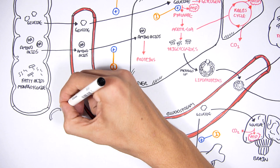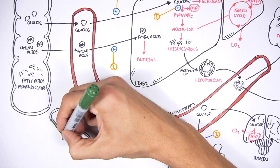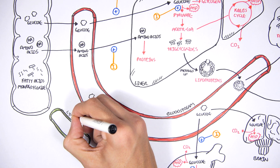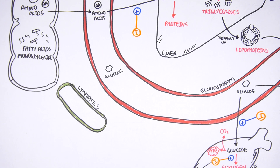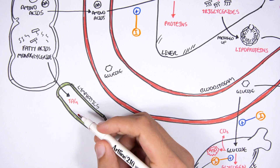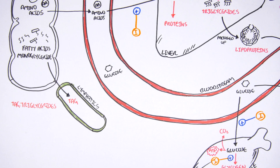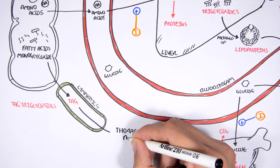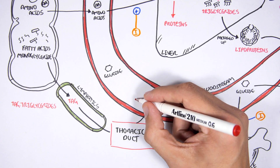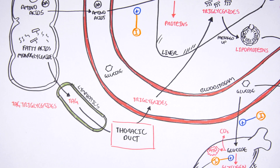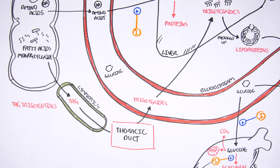Fatty acids and monoglycerides are unique in that they are not absorbed into the bloodstream but instead into the lymphatic system as chylomicrons — essentially packaged-up triglycerides. These chylomicrons travel through the lymphatic vessels to the thoracic duct, which transfers them to the bloodstream. From there, the fats go to the liver to be made into triglycerides, packaged as lipoproteins, and sent to adipose tissue for storage.